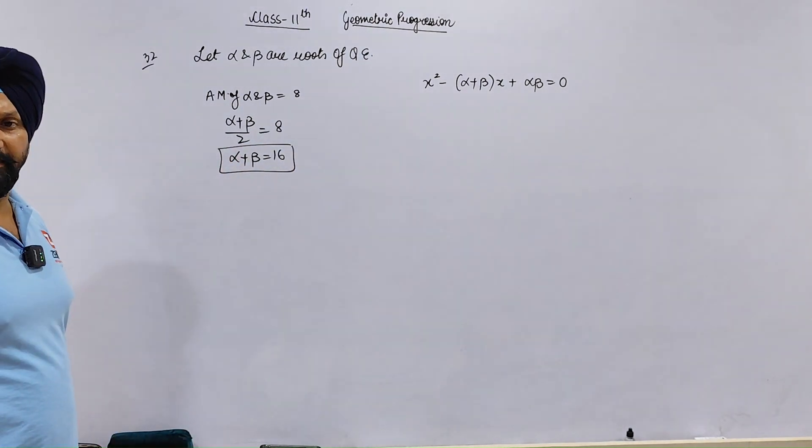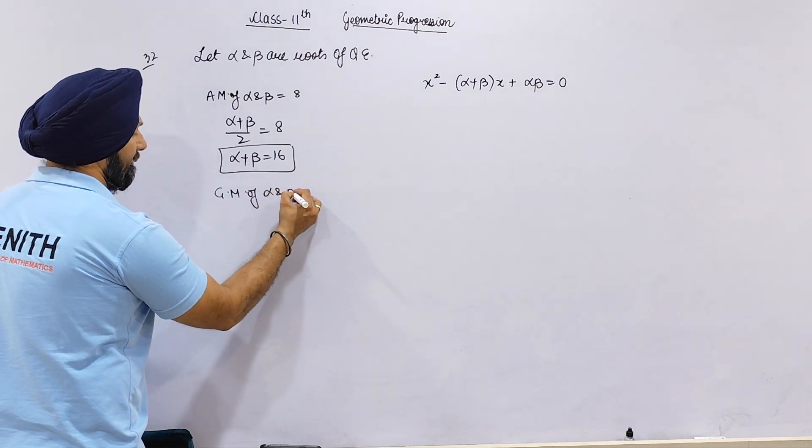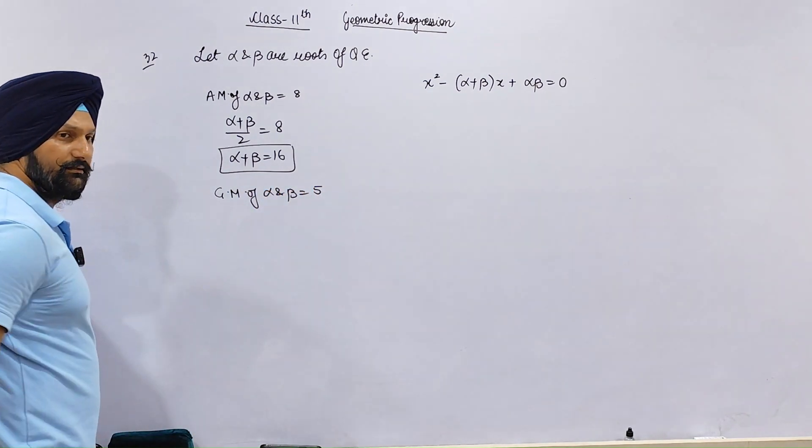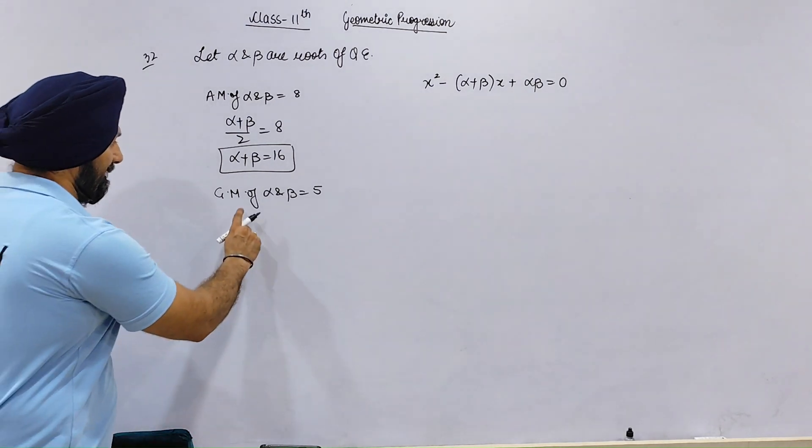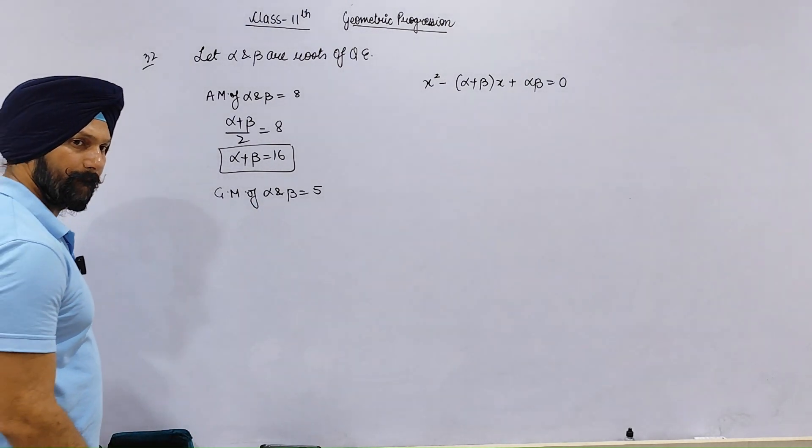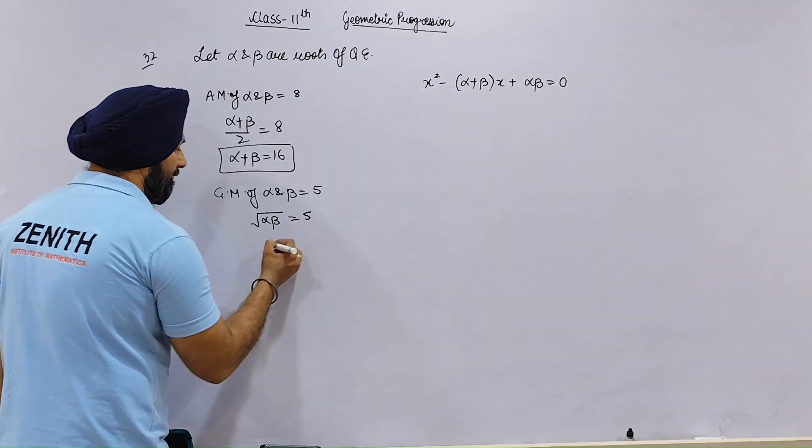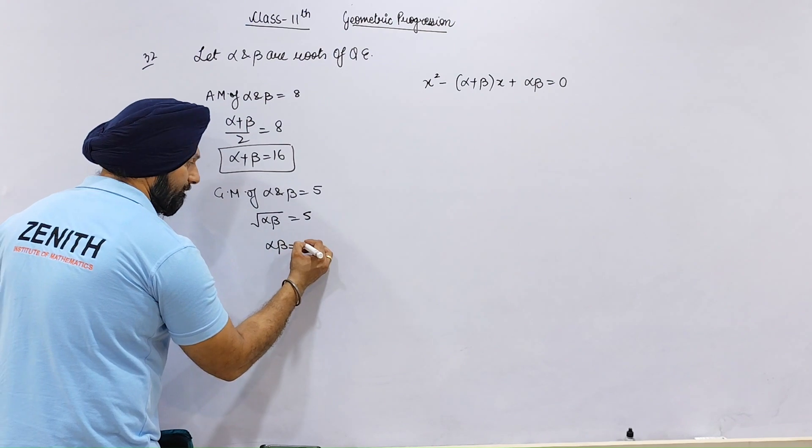The geometric mean of alpha and beta is 5. What is this? The geometric mean of alpha and beta is 5. Is this alpha times beta? 25.